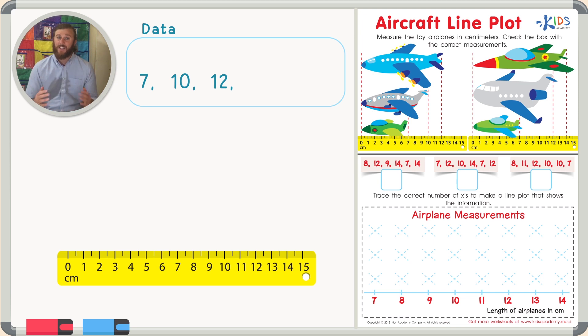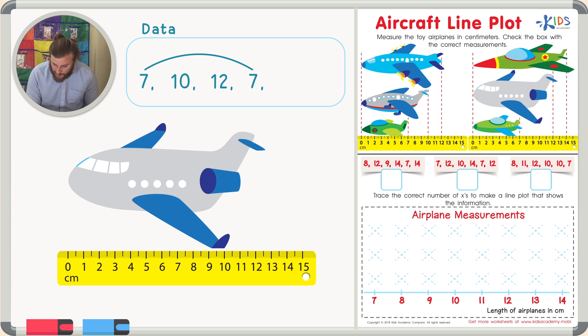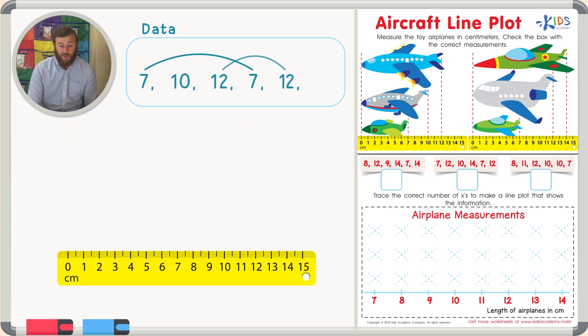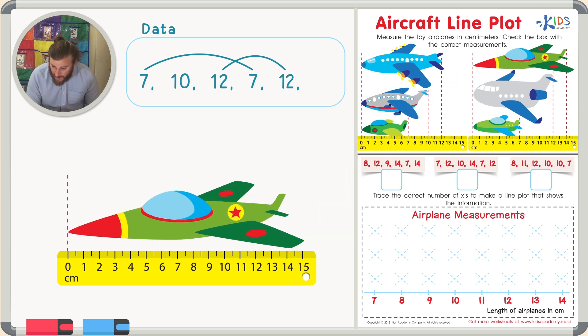Let's take a look at the next three airplanes. We have another green little airplane and it starts at zero and ends at seven. So we have another airplane that's seven centimeters long. I'll draw a line to the two sevens so I remember that there's two of them. My second airplane is this gray airplane. It starts at zero and also ends at 12, so this is also 12 centimeters long. So let's go ahead and draw a line to our two 12s. And finally, our last big airplane starts at zero and ends at 14. So I know this airplane is 14 centimeters long.